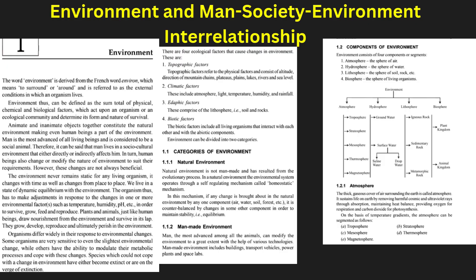The environment and man's society — environment interrelationship. The environment consists of biotic and abiotic, meaning living and non-living components, that interact in a complex system. Humans, as part of the environment, influence and are influenced by natural processes. Society shapes its environment through urbanization, industrialization, and technological advancement. The man-society-environment relationship is dynamic, with human activities impacting ecosystems, climate, and biodiversity. Environmental awareness is crucial to balance development and conservation.